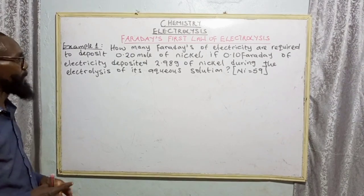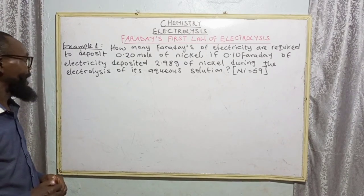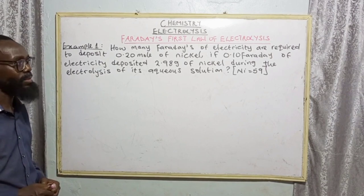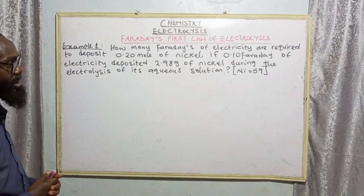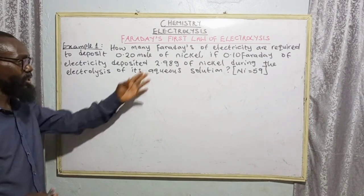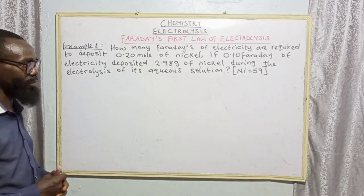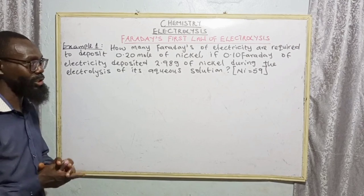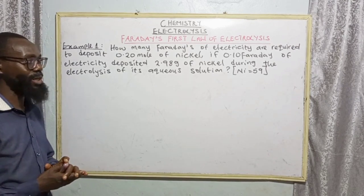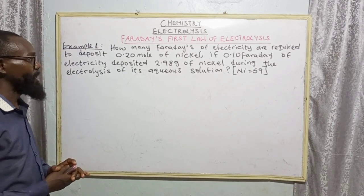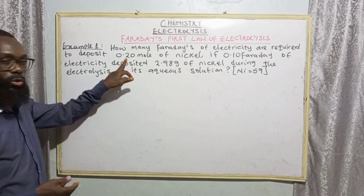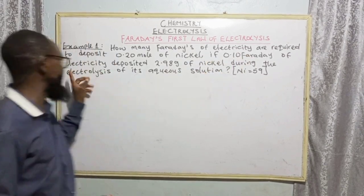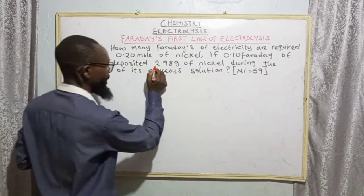Example 1. How many Faradays of electricity are required to deposit 0.20 mole of nickel if 0.10 Faraday of electricity deposited 2.98 grams of nickel during the electrolysis of its aqueous solution? When we look at this question, we are asked to find the number of Faradays of electricity required to deposit 0.20 mole of nickel, if 0.10 Faraday of electricity deposited 2.98 grams.